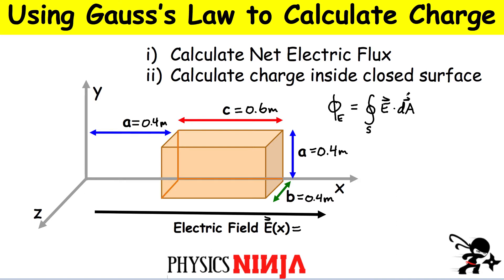That integral over the closed surface has to be equal to how much charge is enclosed divided by a constant, epsilon zero, the permittivity of free space. So how are we going to apply this to this type of problem?